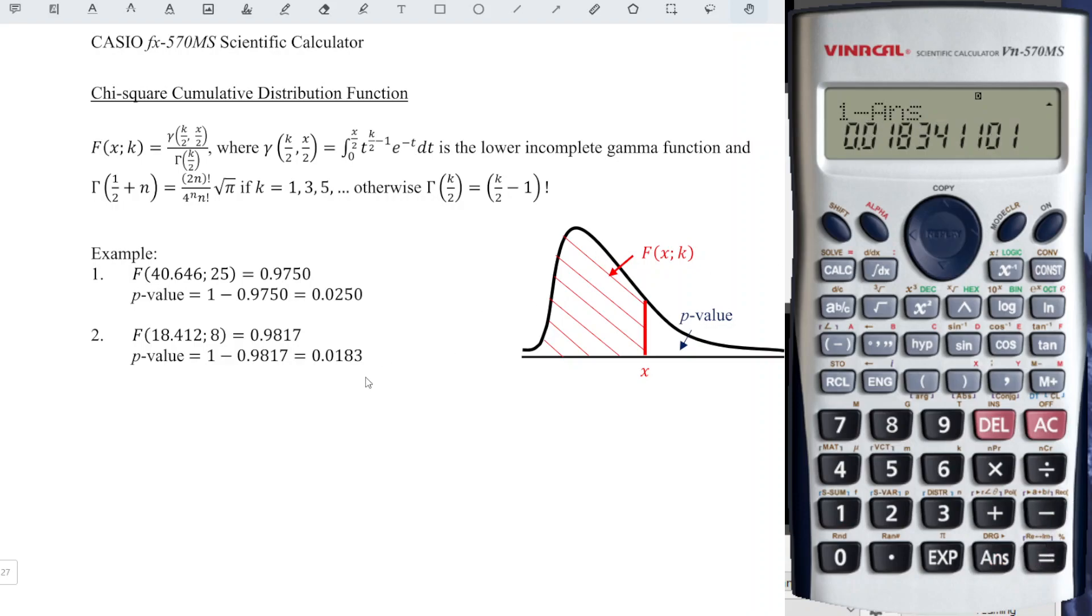So what we have to do here to obtain p-value, 1 minus the answer that we obtained. So we obtain the correct p-value. And then we're done. Okay, that's all for this video. Thanks for watching. Hope you like this. See you.